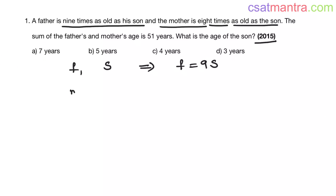Let's call the mother's age as m. So mother is eight times as old as the son. Now the sum of father's and mother's age is 51 years. So f plus m equals 51 years. What is the age of the son? So we need to find out s.